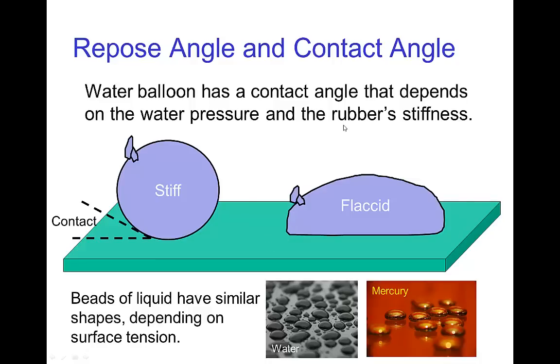Now we see similar effects with droplets. Droplets also form these different shapes, and the smaller droplets that weigh less tend to be rounder, more spherical, and the large droplets tend to be more flattened.